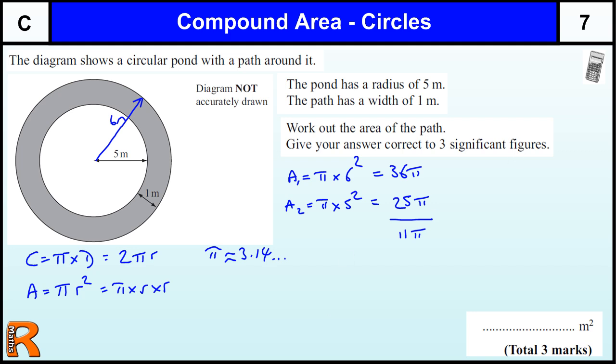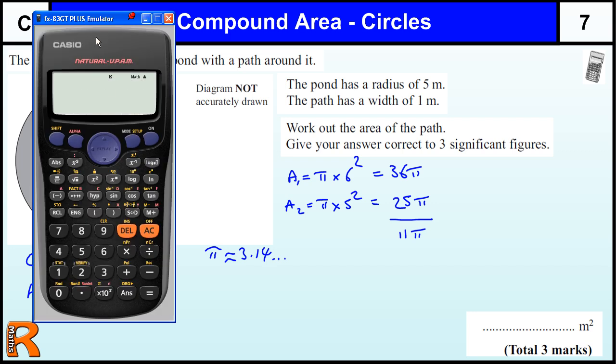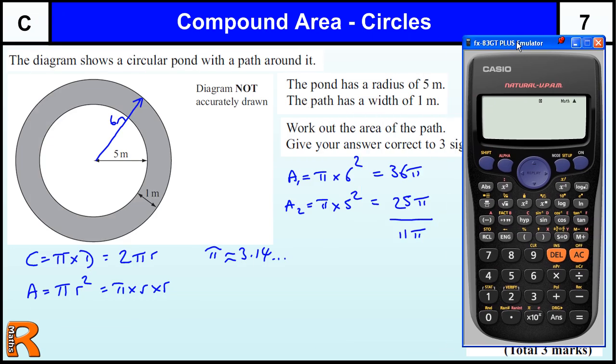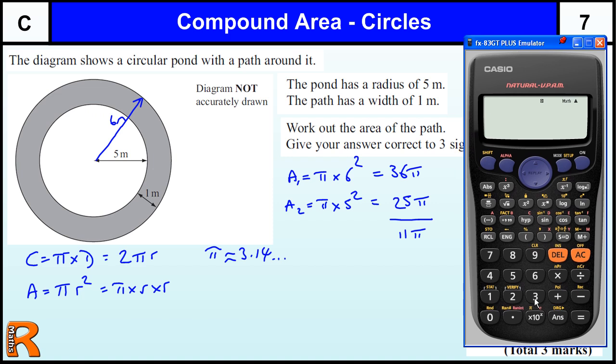But as it is asked for 3 significant figures, we must use the calculator. Let me just pull up the calculator that I have got. I will clear the answers from the last question I did. So going back to the 36, the pi button is this one. On this calculator, it is the shift of this button because it is the gold colour, shift gold colour.